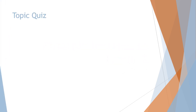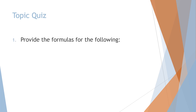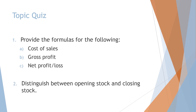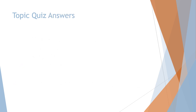Topic quiz: take a minute or two to answer the following on a separate paper or page in your exercise book, to make sure that you understood the homework of the previous lesson. Number one: provide the formulas for the following: a) cost of sales, b) gross profit, and c) net profit or net loss. Number two: distinguish between opening stock and closing stock. Pause the video now.